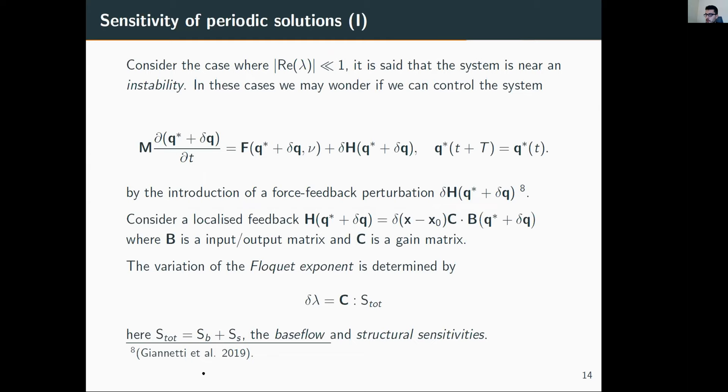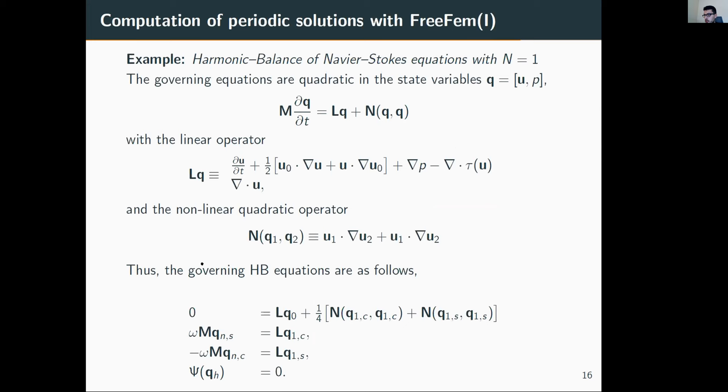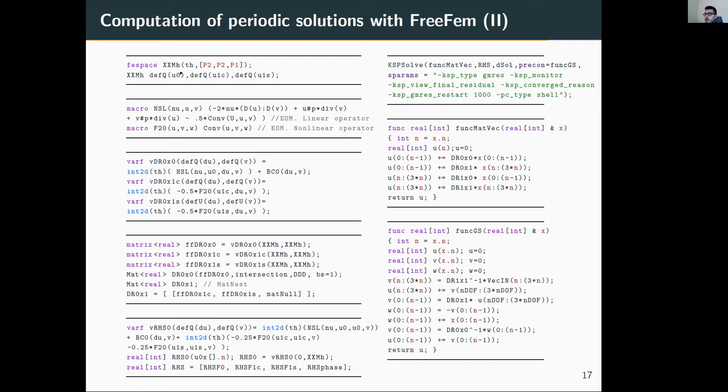How is this done in FreeFEM? First we define a finite element space—we consider here Taylor-Hood basis, P2 for velocity and P1 for pressure. For the velocity space, we define a series of velocity vectors for each mode: the mean flow, cosine of first mode, and sine of first mode.